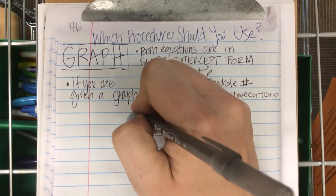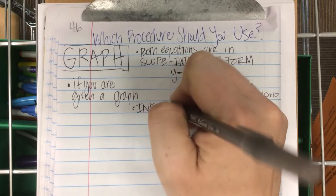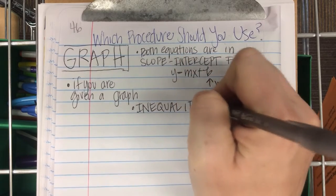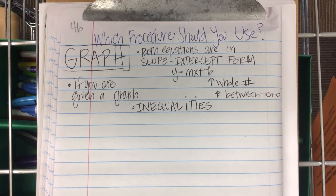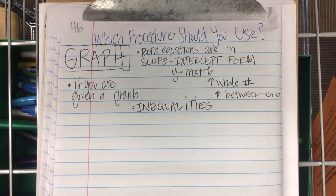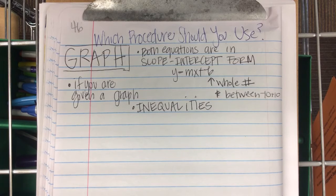Inequalities. If it's an inequality — greater than, less than, greater than or equal to — you have to graph it, because the answer is where the shading intersects. So to summarize: if both equations are written in y equals mx plus b, or you're given a graph, you should probably graph it. And if it's an inequality instead of an equation, you have to graph it — no ifs, ands, or buts.